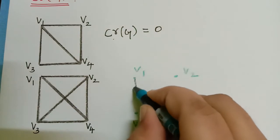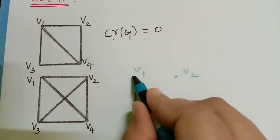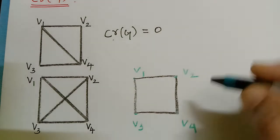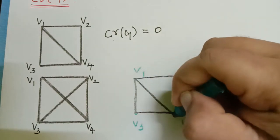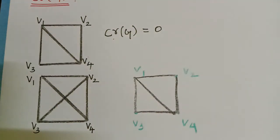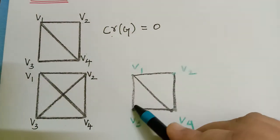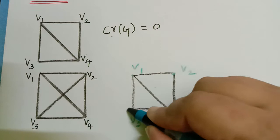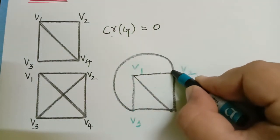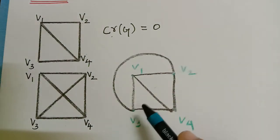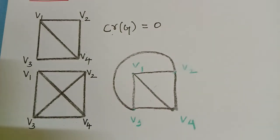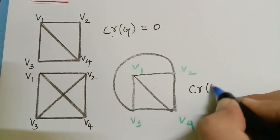We shall draw the edges of this graph. There is an edge between V1-V3, V1-V2, V2-V4, V3-V4, and there is an edge between V1 and V4. Now if we draw an edge between V3 and V2 in a different manner, there is no crossing. So the crossing number of this graph is 0, and this graph is isomorphic to the given graph. Therefore the crossing number of this graph is equal to 0.